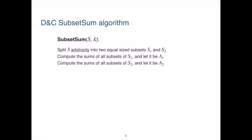So this is the idea. We split S into two equal halves, S1 and S2. Then we enumerate all the subsets of S1, compute their sums to create a new set A1.